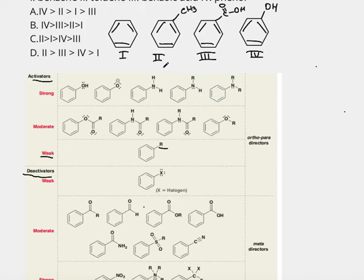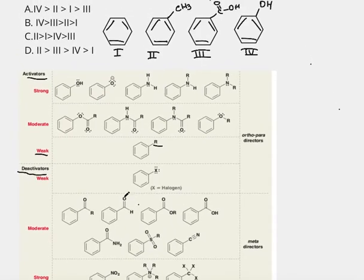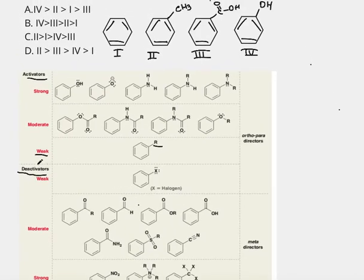So that's our toluene. Now let's go to benzoic acid. We have the group C double bond O, OH attached to the benzene ring. Does it make it more reactive or less reactive? Well, if you look at the chart, we can see that the COOH group belongs to deactivators. So it makes the benzene ring less reactive, and it's moderately deactivating.